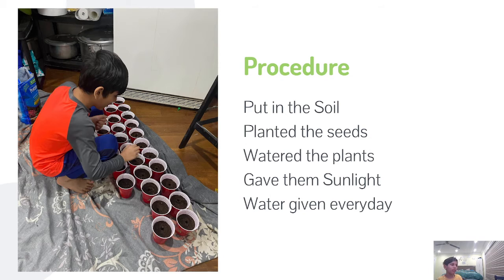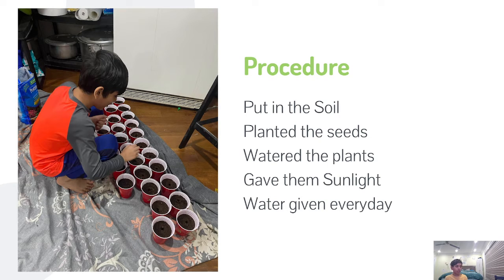The procedure is very simple. I put the soil into the cups up to the middle line. Then I planted the seeds three centimeters down in the soil. After that, I watered them, giving each 20 milliliters of water. Then I put them in sunlight and watered them every day. Finally, I measured them on day 8 and day 22. I had five trials of each type of water so that I could calculate the average amount of plant growth.